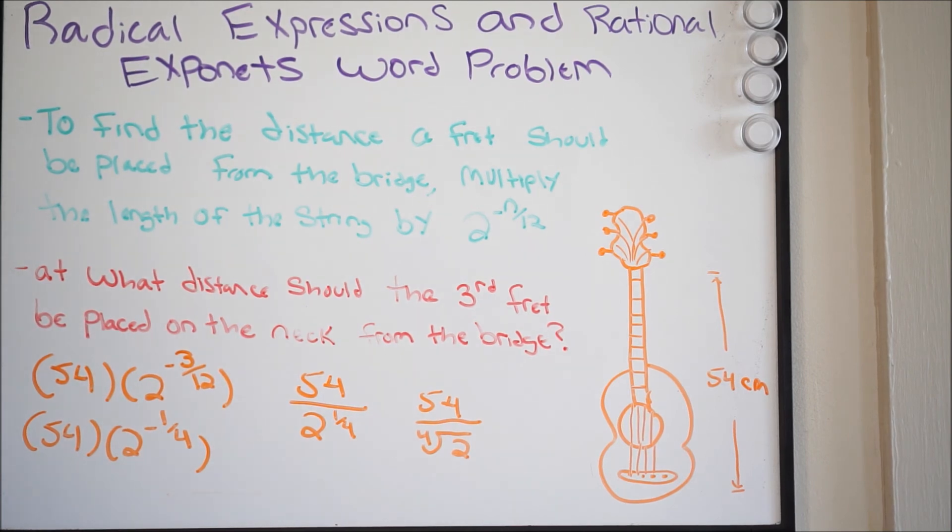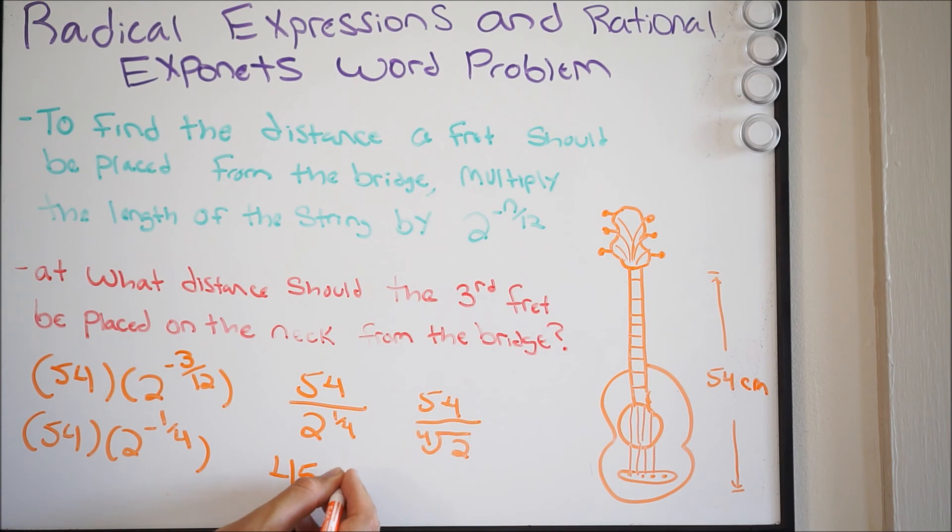54 divided by the fourth root of 2, and we get 45.4, and we'll say 45.41. So we get 45.41, and this will be in centimeters, and that's going to be your final answer.